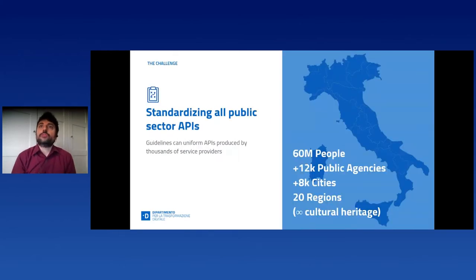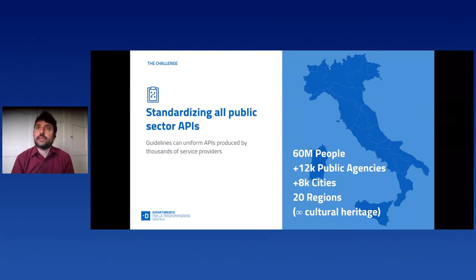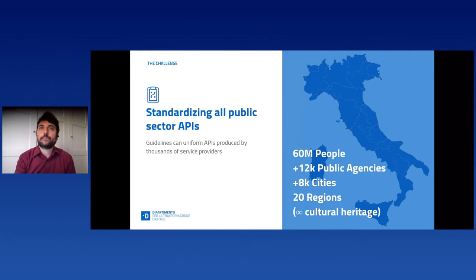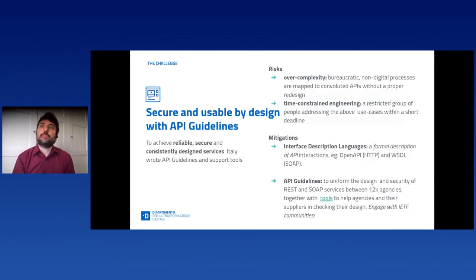One of the goals we have in Italy is to uniform the APIs produced by the many Italian public agencies. This is challenging — agencies are thousands — and because we are transitioning from the old SOAP framework to a new one which allows using REST and more generally HTTP APIs. The solution involves creating API data guidelines and validation tools to achieve reliable, secure, and consistently designed services.